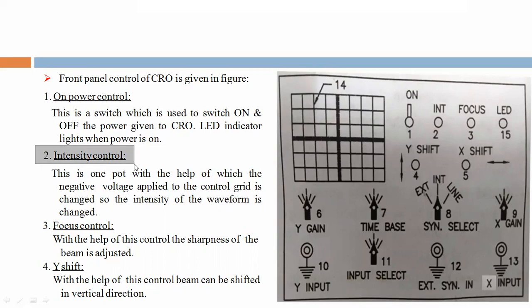Second, intensity control. This is one port with the help of which the negative voltage applied to the control grid is changed, so the intensity of the waveform is changed.